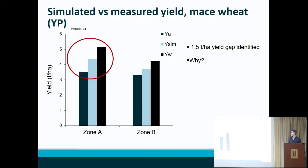To ask a very simple question: was the field nitrogen limited? In this particular example, on zone A of this field, we have a one and a half tonne yield gap, which is quite substantial. In zone B, where there are some soil constraints that we have identified, that gap is much lower.